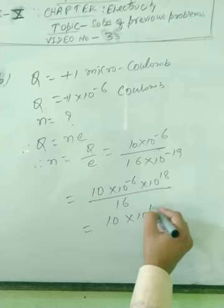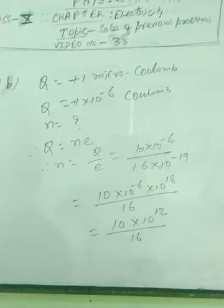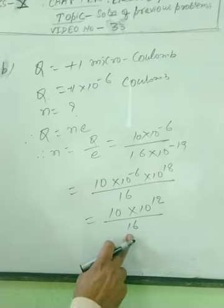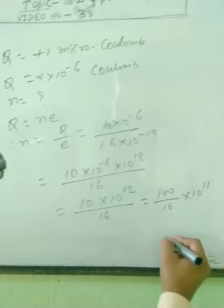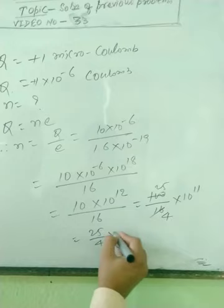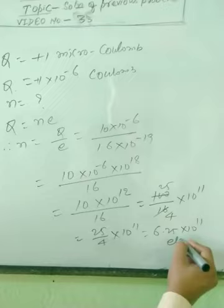The value of numerator should be more than the denominator, so put one more zero taking from this, make it 100 by 16, and it remains 10 to the power 11. 25 by 4 into 10 to the power 11 means 6.25 into 10 to the power 11 electrons. This is your answer.